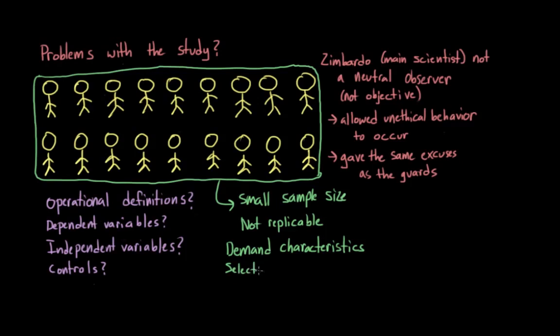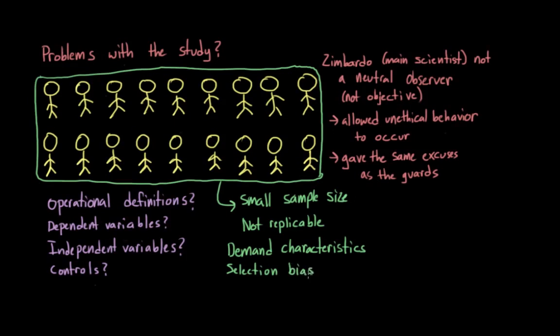The study is also one that could have been greatly affected by selection bias, really here more than most studies, because there was no deception in the study. So in some ways, the participants all knew exactly what they were signing up for. And I have to think, what kind of student willingly signs up to be put in a prison, either as a guard or a prisoner, for two full weeks?